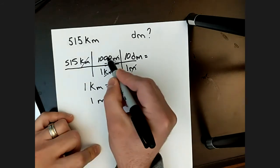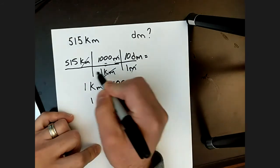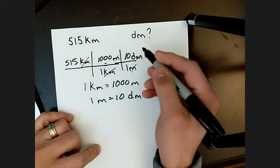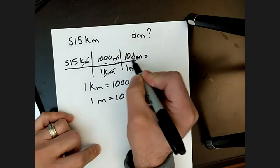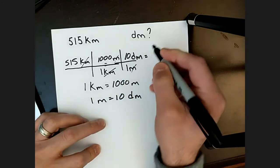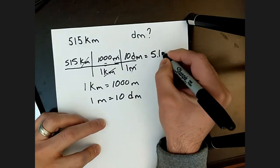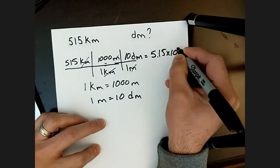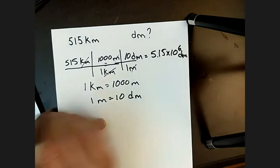And so here, you'd multiply all the values on the top and divide all the values on the bottom. So that's just the 515 times 1000 times 10.